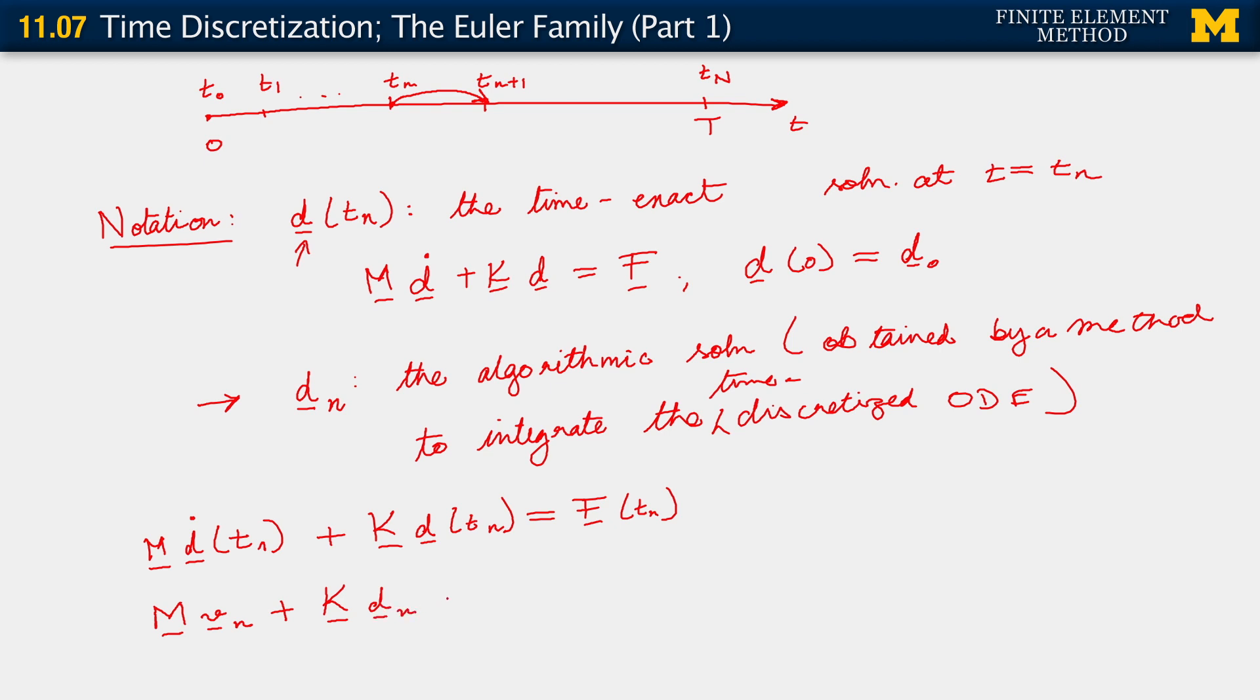Plus kdn equals f at n. This is what we mean by saying that v at n is a discretized approximation. It's a time discretized approximation of d dot. D n is, of course, just as we've defined above. So, this is what we call, what I will refer to as the discretized version of the ODE.